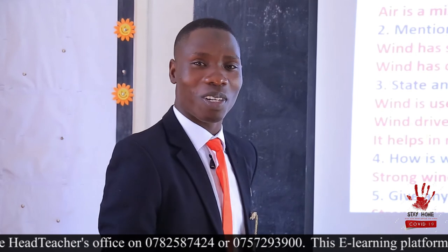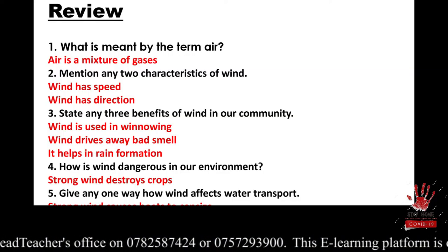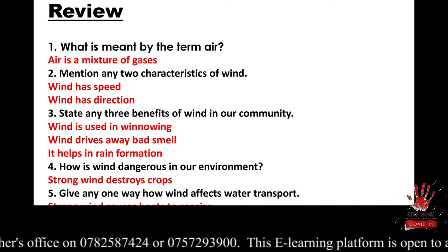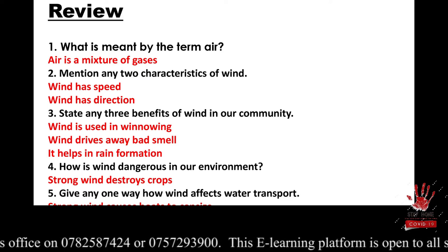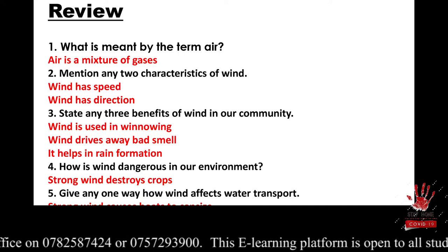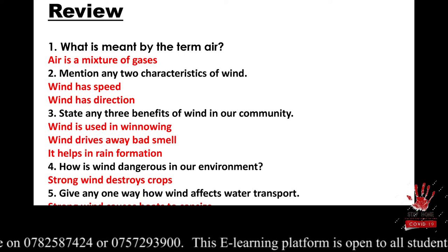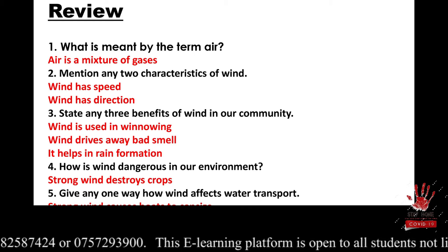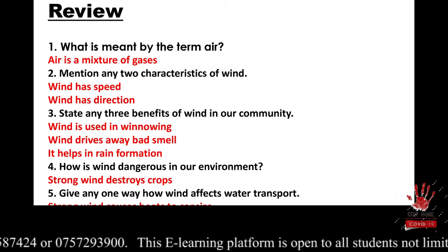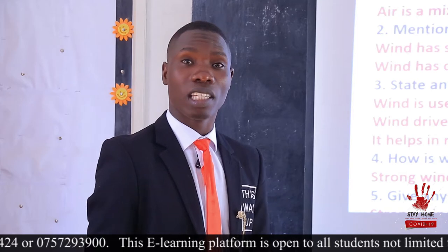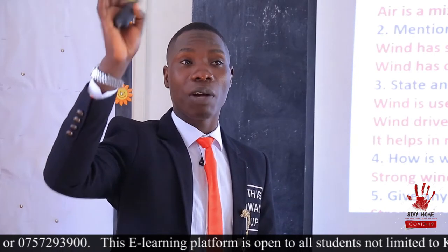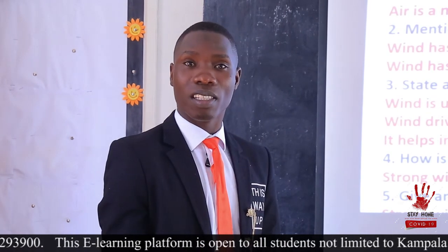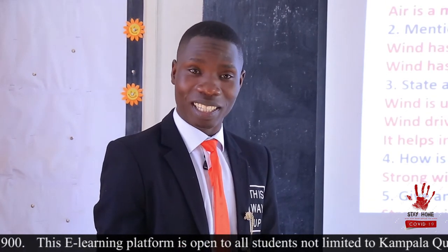Let's get to question number four: how is wind dangerous in the environment? Mainly when there is too much strong wind like tornadoes. One: strong wind destroys crops. You can also say strong wind can blow off roofs of houses. Then a strong wind can also capsize boats on water bodies.